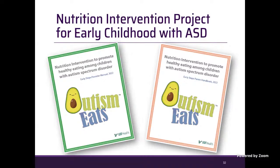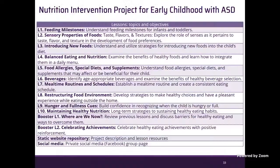The intervention is called 'Nutrition Intervention to Promote Healthy Eating Among Children with Autism Spectrum Disorder.' We have a provider manual with step-by-step instructions and handouts, and a parent handbook with parent instructions and all handouts. The program consists of 10 weekly sessions followed by two booster sessions one and two months after completion.